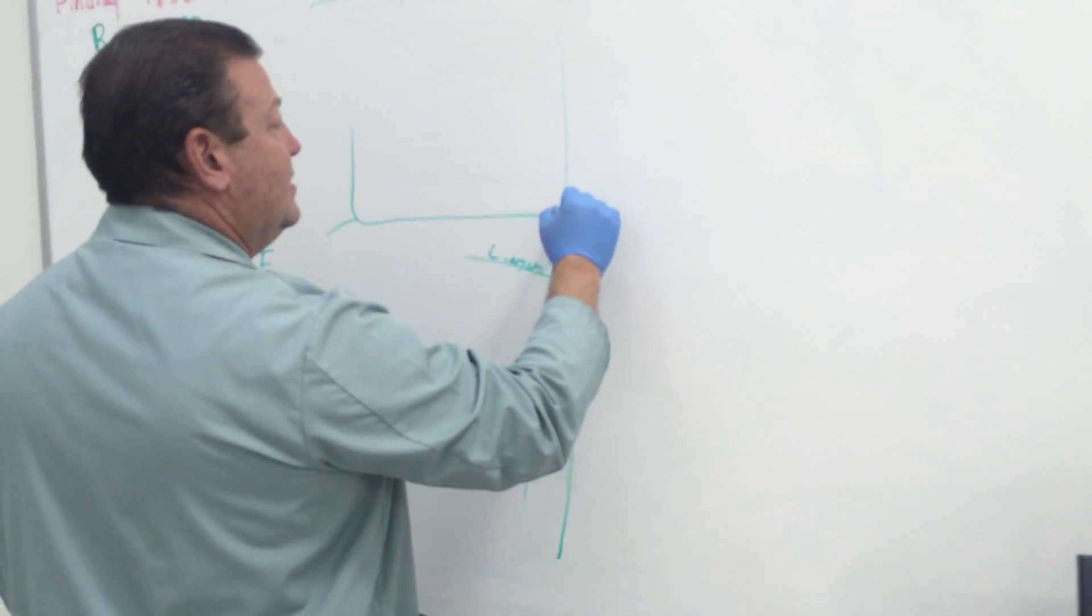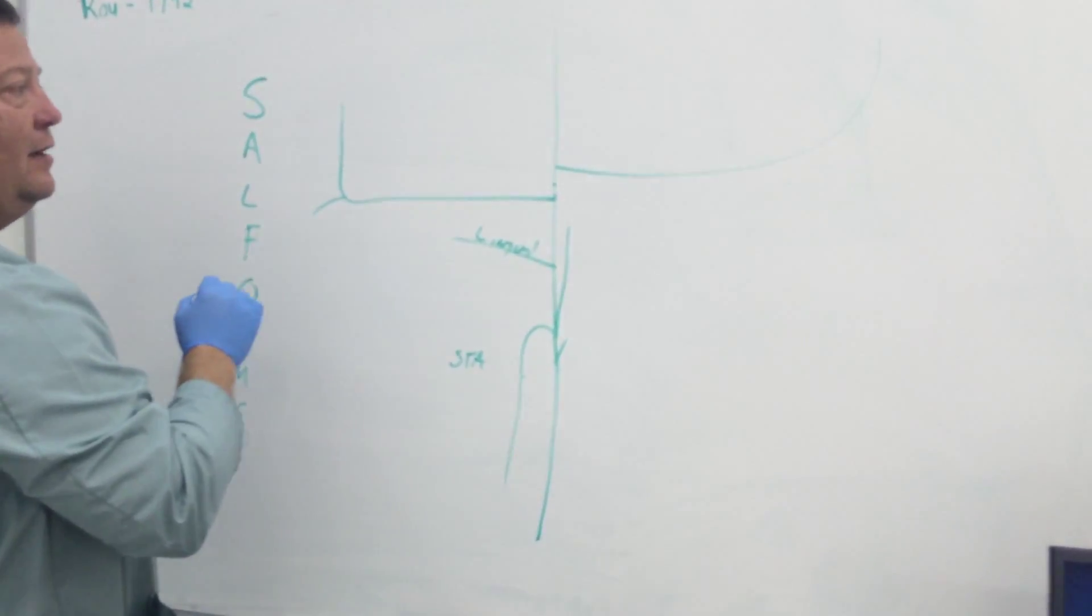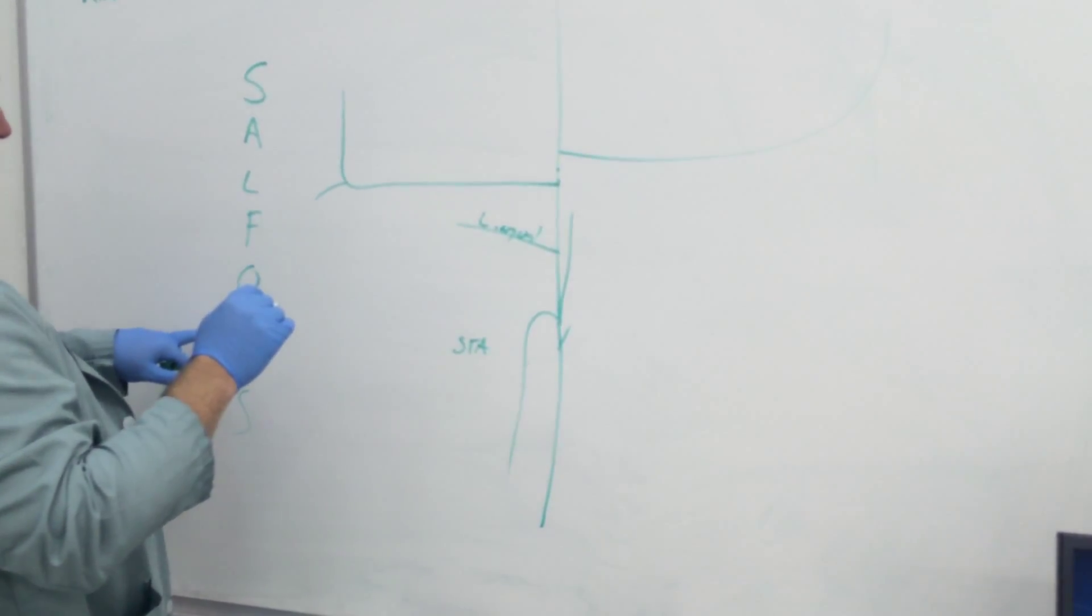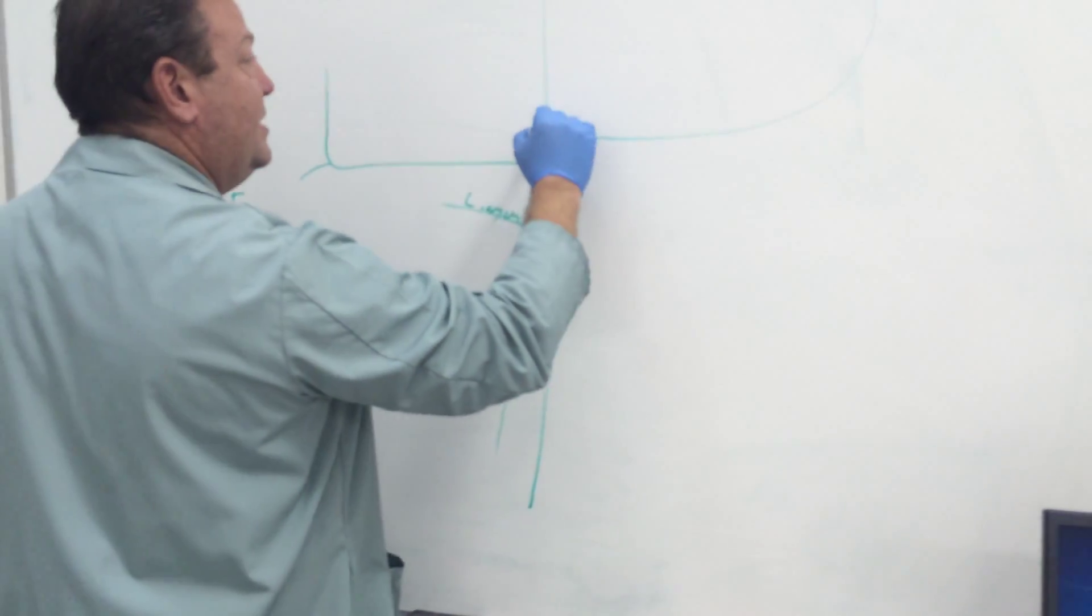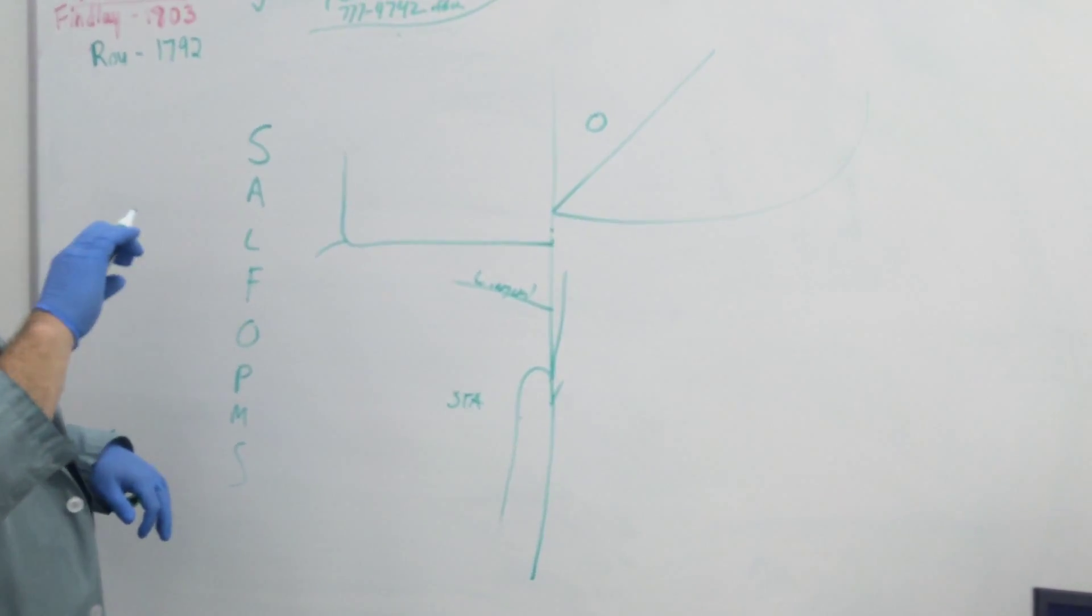The next one is the occipital, running the other way, running off across the back of the head. The next one is the posterior auricular, so it's right behind your little ear hole there, running around the back of the ear.